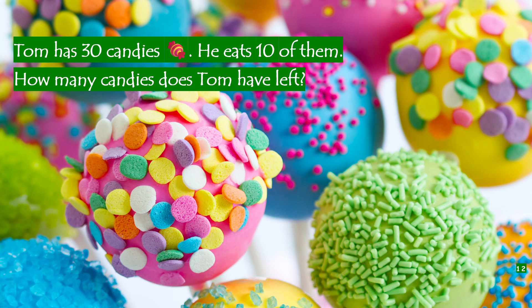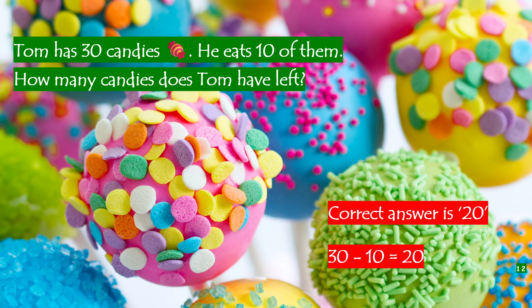Tom has thirty candies. He eats ten of them. How many candies does Tom have left? The correct answer is twenty. Twenty minus ten is twenty.